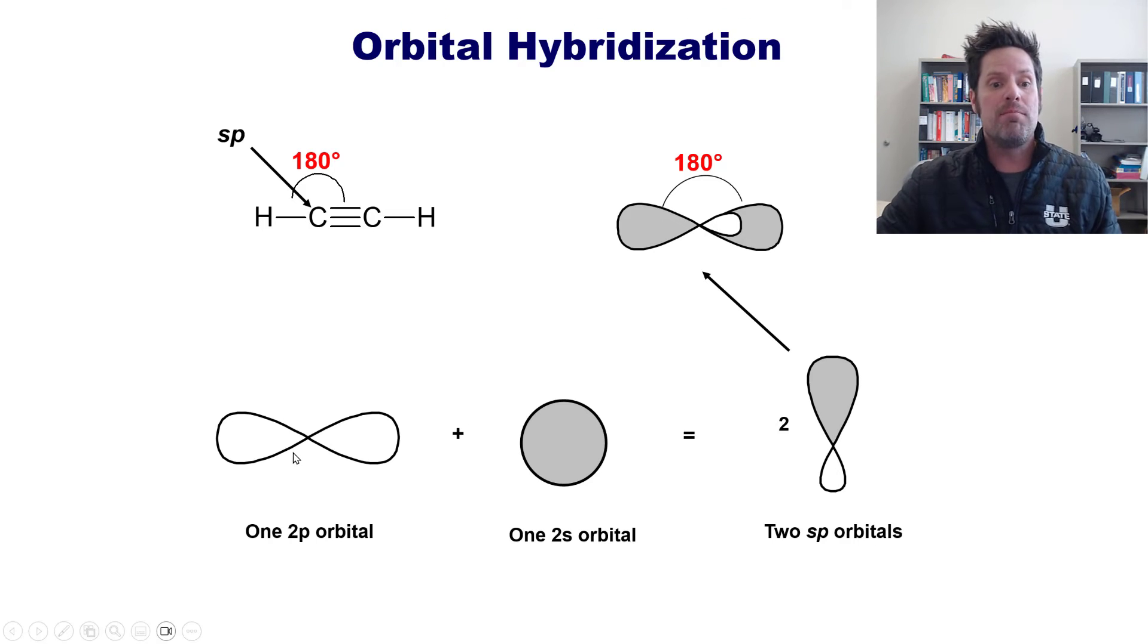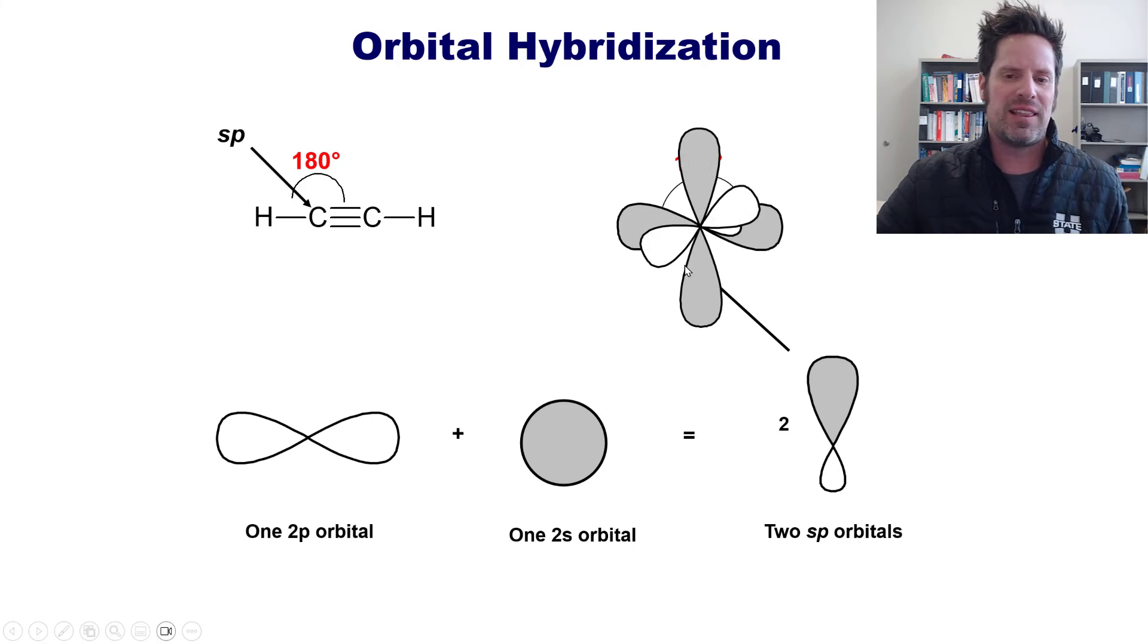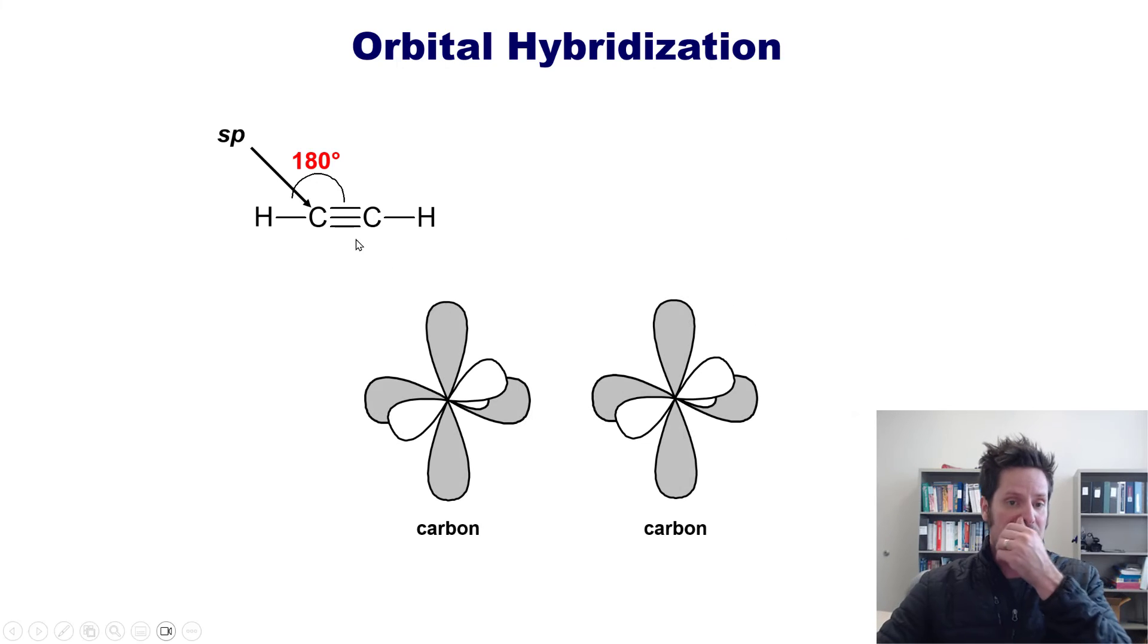What happened to the two remaining p orbitals that were not used in this hybridization? The pz and the py? Well, they're just straddling the atom's nucleus like that, all perpendicular to each other. Obviously, both of these carbon atoms have done that same thing because they're both sp hybridized.